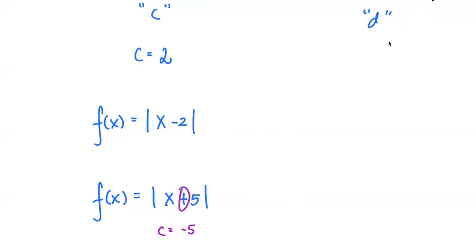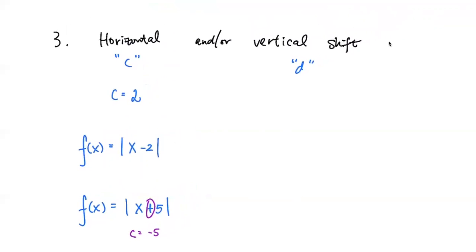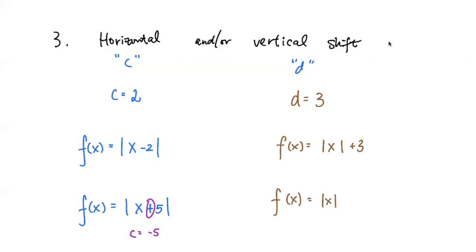If we see absolute value of (X + 5), that means it is moving to the left five units, because C equals negative five, which is why you see a plus sign next to X. For the D value, it's straightforward: if the graph moves up, D is positive. For example, moving up three units gives f(x) = |x| + 3. If it moves down four units, we write f(x) = |x| − 4. That's how you write equations efficiently and accurately.